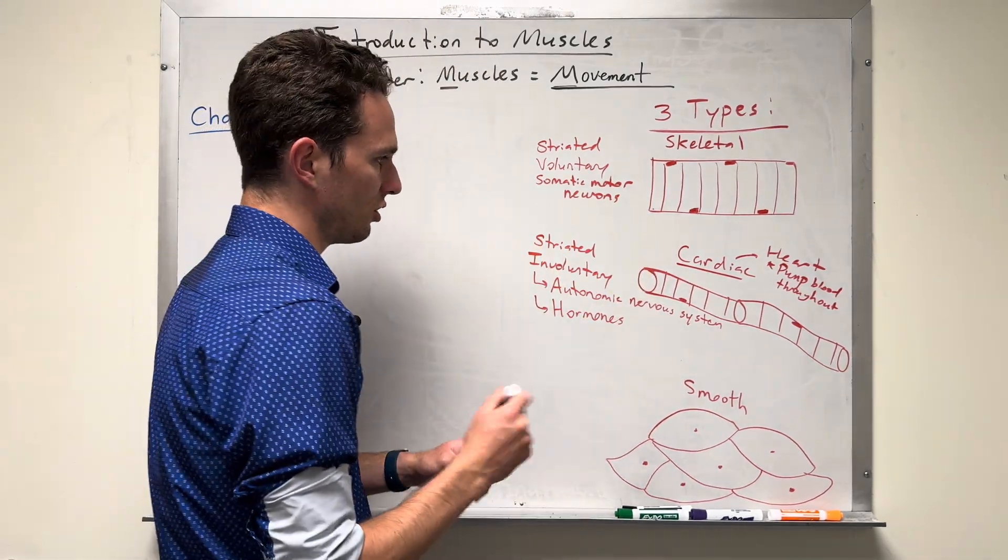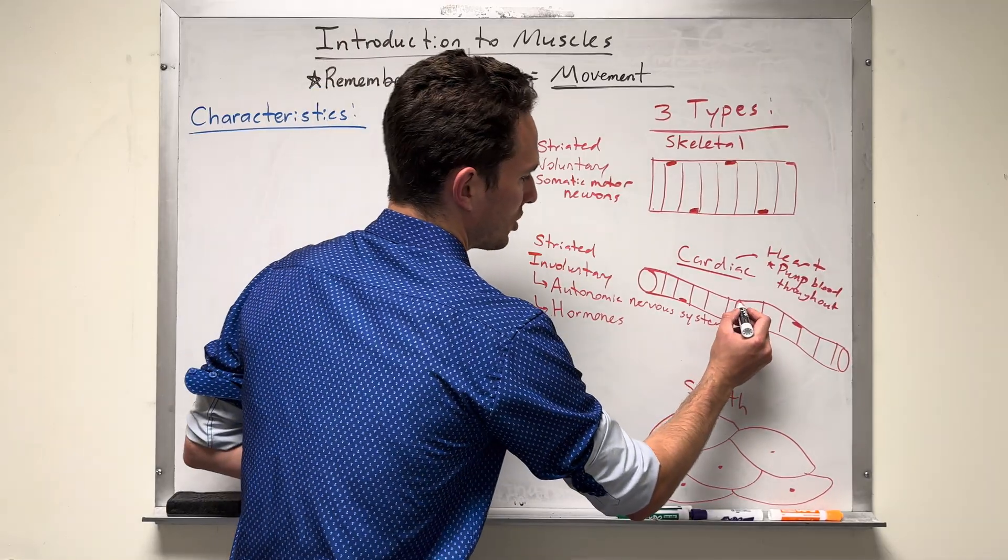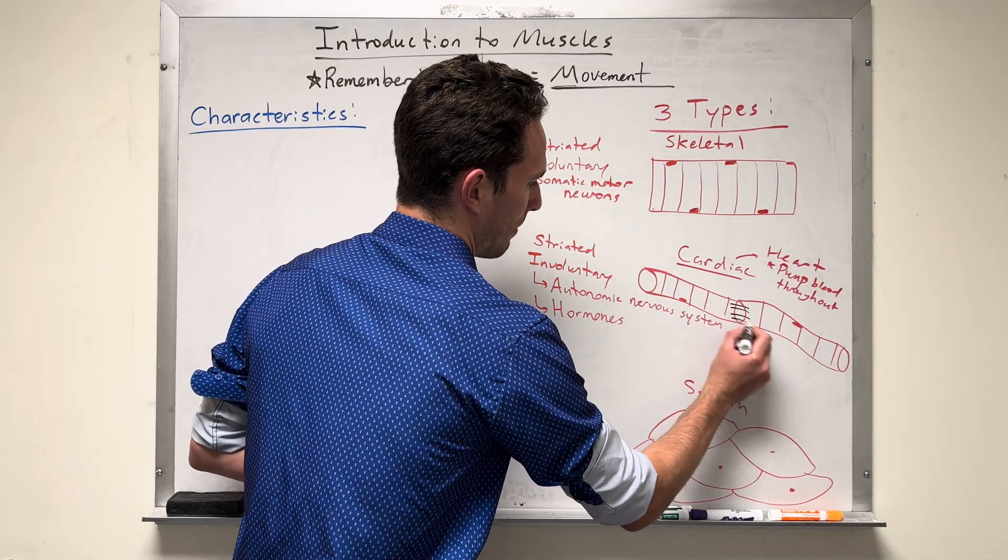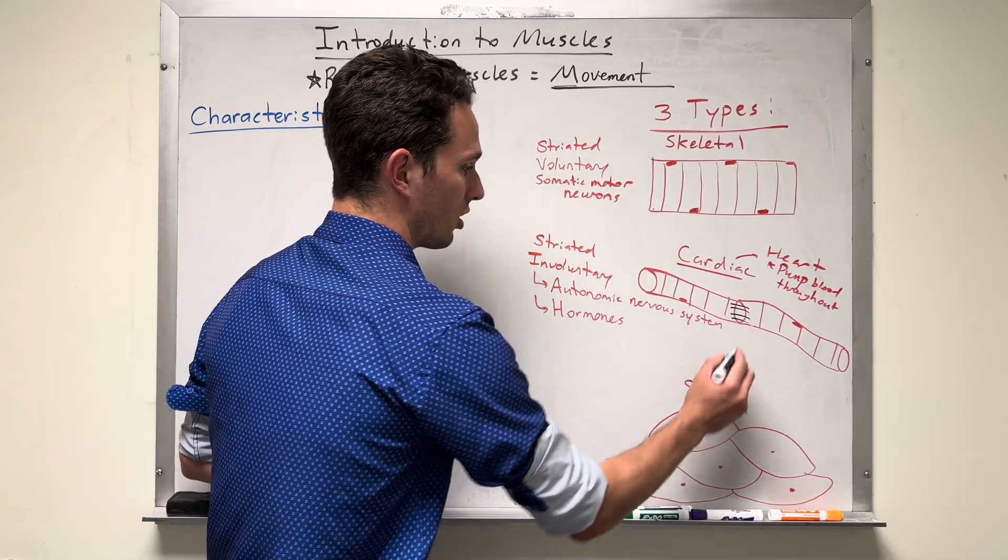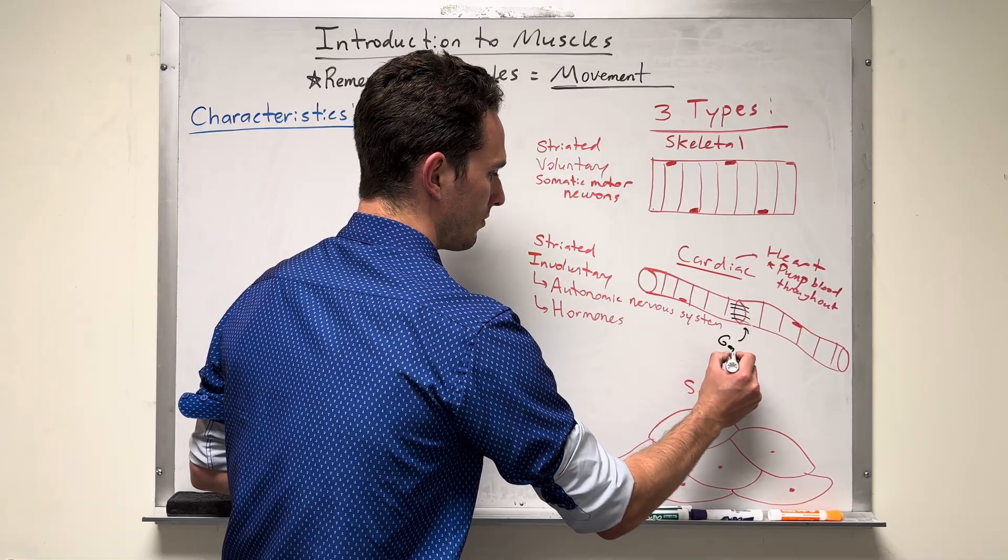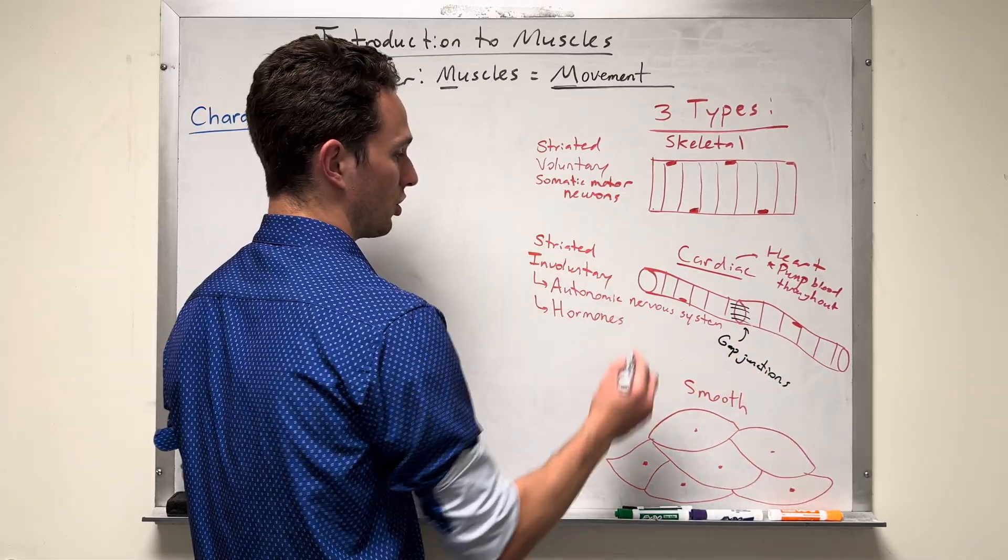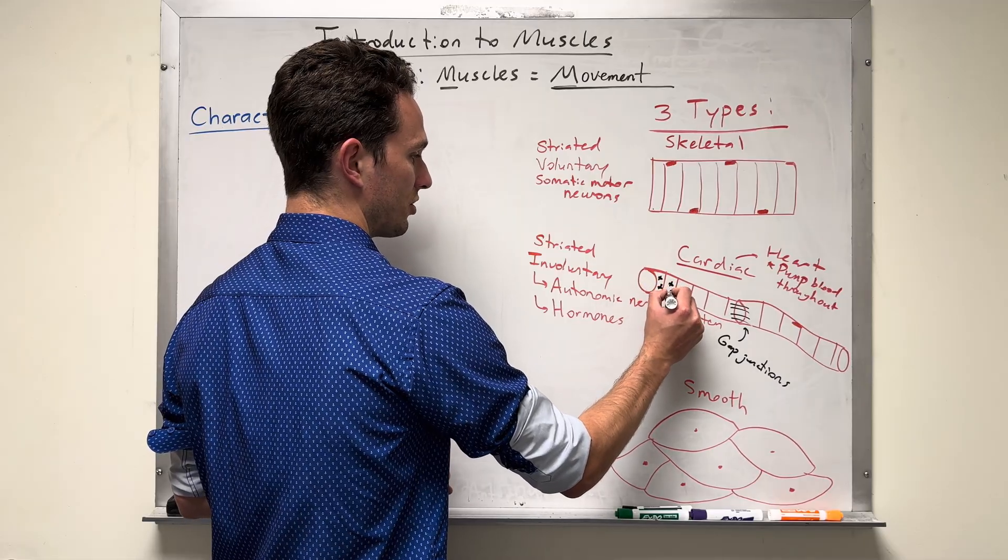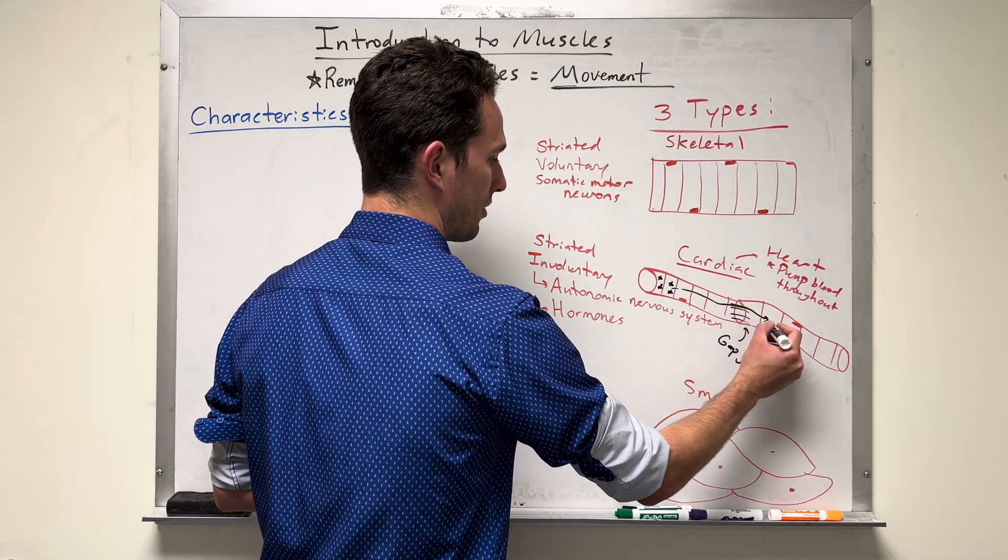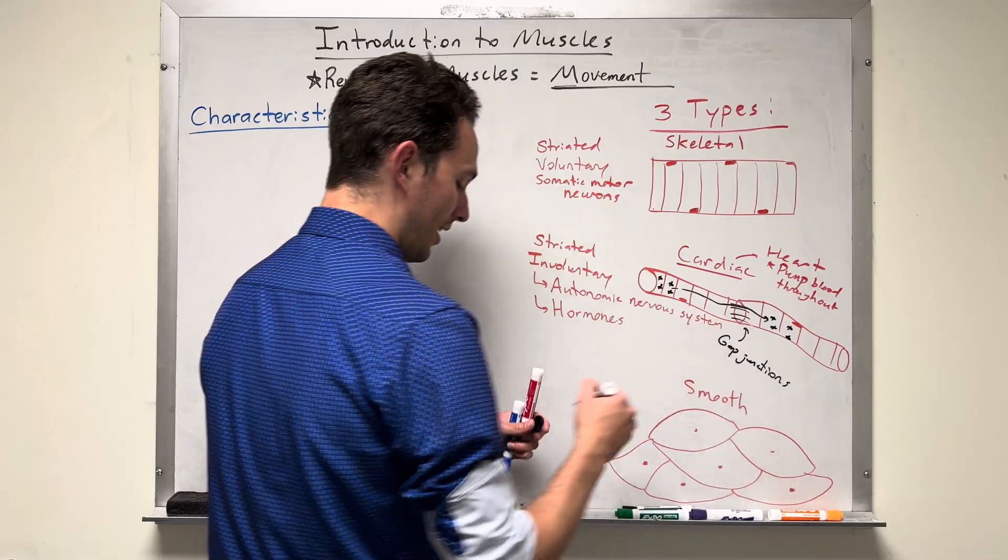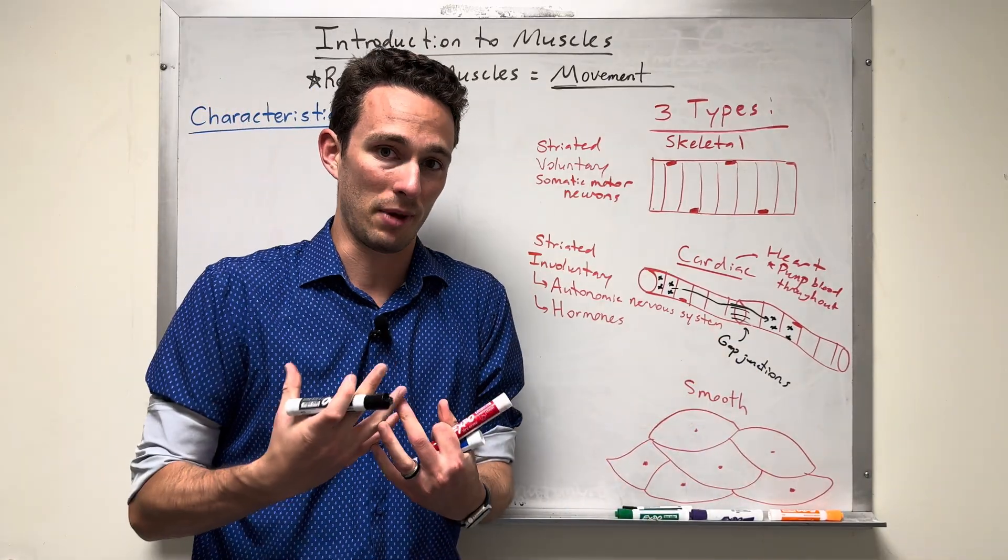One other thing with the cardiac muscle tissue is that they contain small channels between the cardiac myocytes, so the two muscle cells, called gap junctions. And these gap junctions allow for basically electrical potential, like positive charges, to flow from one to another very rapidly.